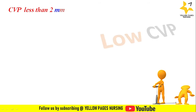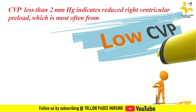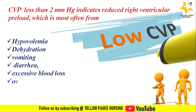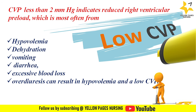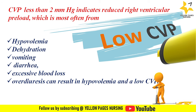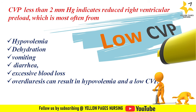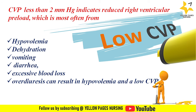When central venous pressure falls below the normal level, a CVP less than 2 mmHg indicates reduced right ventricular preload, which is most often from hypovolemia. Causes include dehydration, vomiting, diarrhea, excessive blood loss, and over-diuresis. This should be correlated with clinical features — the patient may have tachycardia, hypotension, and oliguria or anuria. The main goal is identifying and treating the underlying cause, and treatment includes fluid resuscitation until CVP returns within the normal range.